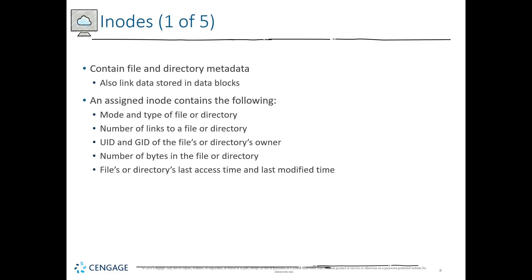An inode contains file and directory metadata and also links the data to the stored portion of the data blocks. The data blocks are where the actual file is housed, but the attributes and metadata are stored in the inode. An inode contains the mode, the type of the file or directory, the number of links, the graphical ID (GID), the UID, the owner, number of bytes in the file or directory, last access time, and modified time — all of that is part of the metadata for an individual data file or directory.